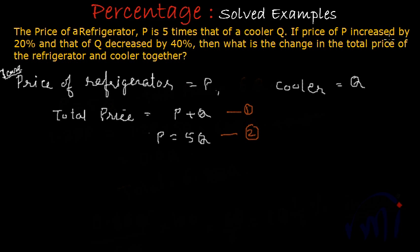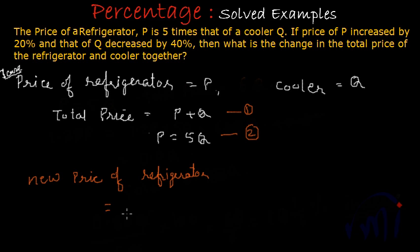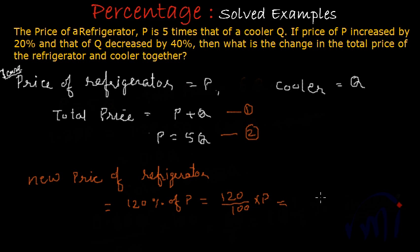Then they say if the price of P is increased by 20%, the new price of the refrigerator will be 20% more than its original price. 20% more means 100 plus 20, that is 120% of P, which equals 120 divided by 100 multiplied by P. Solving further, the new price of the refrigerator will be 1.20P.